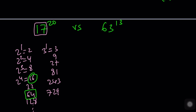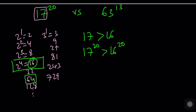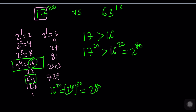You could use the binomial theorem, thinking of this as (16 + 1)^20. But we're going to use the transition idea instead. 17 is greater than 16, and if you raise both sides to the power 20, this inequality is maintained because the bases are greater than 1. Since 16 is 2 to the 4th power, 16^20 equals (2^4)^20 = 2^80. Now let's deal with 63.